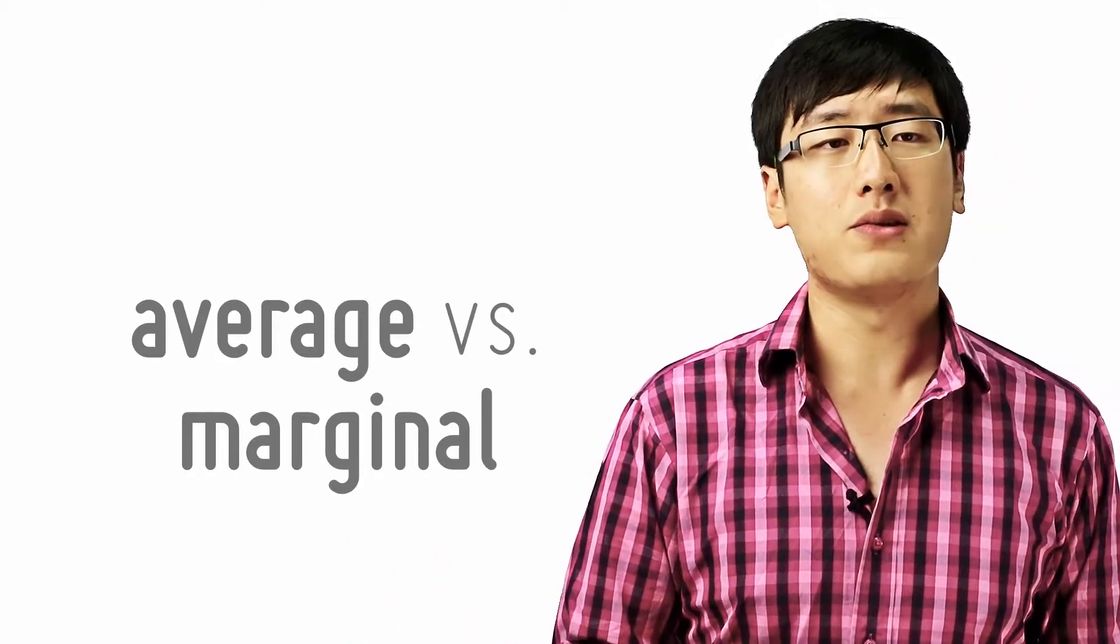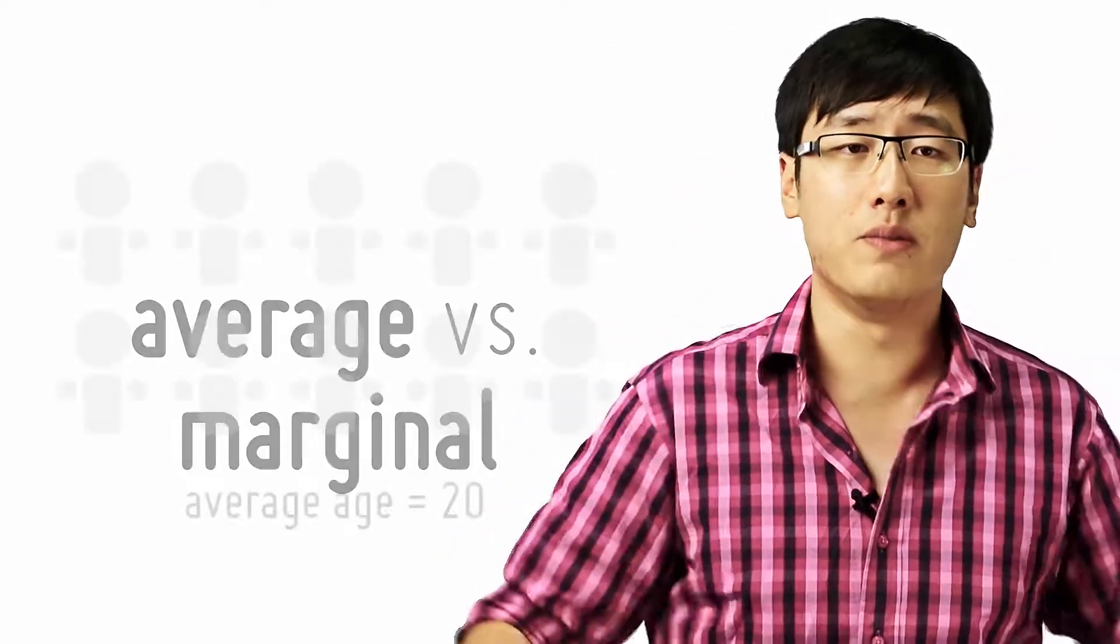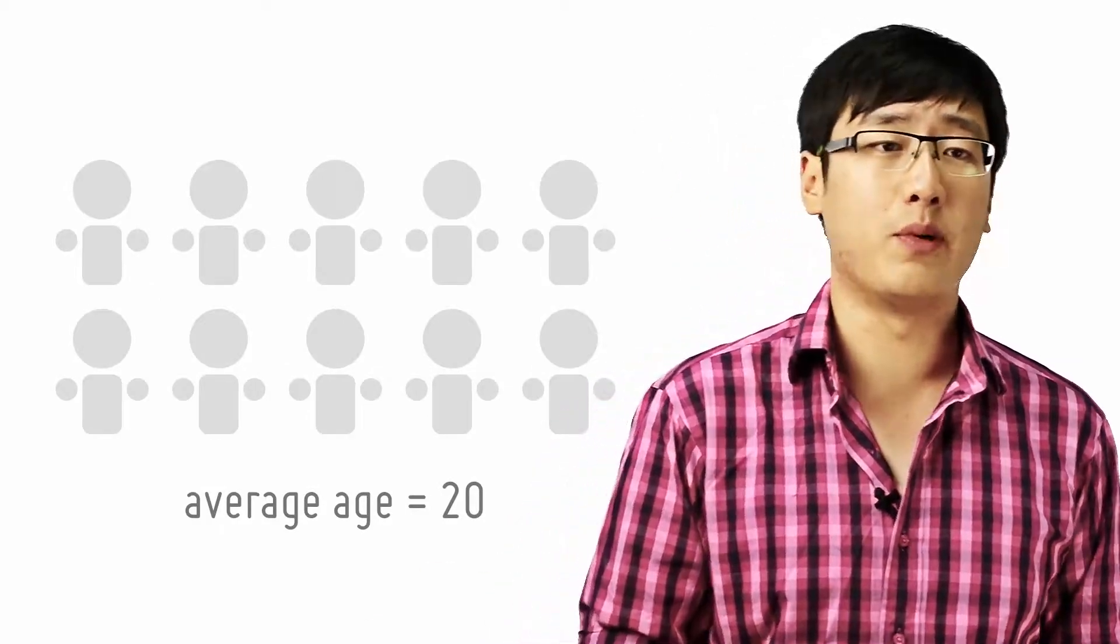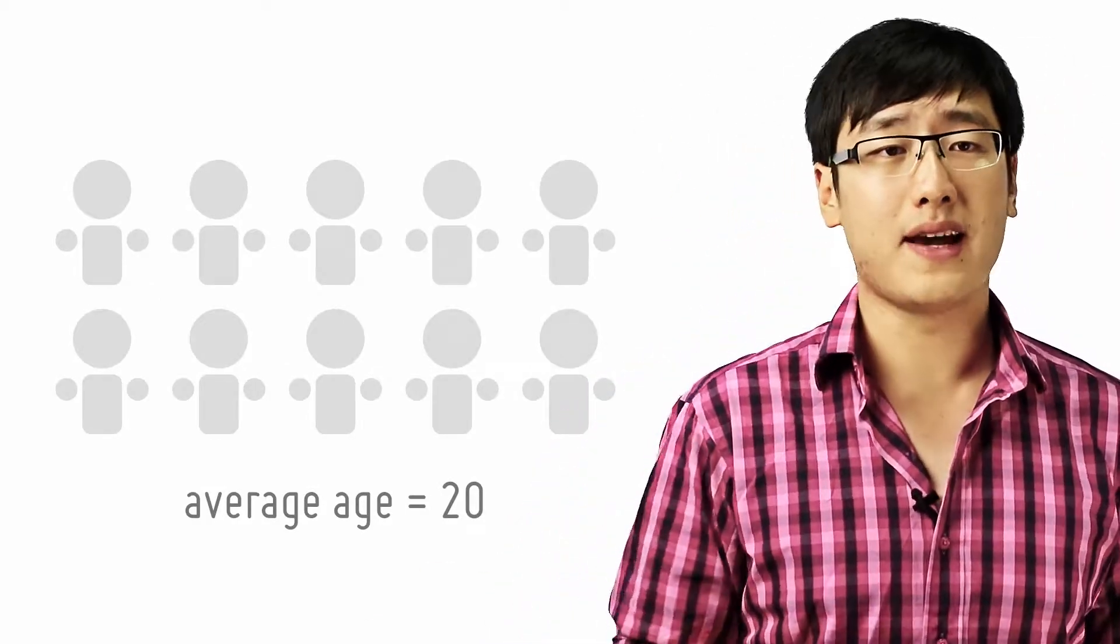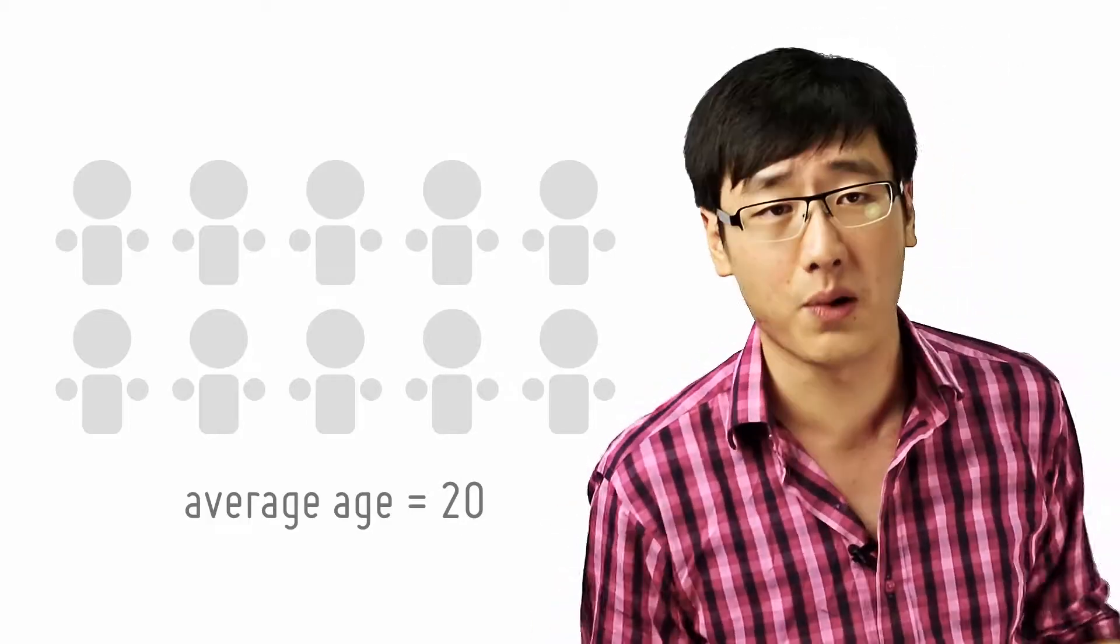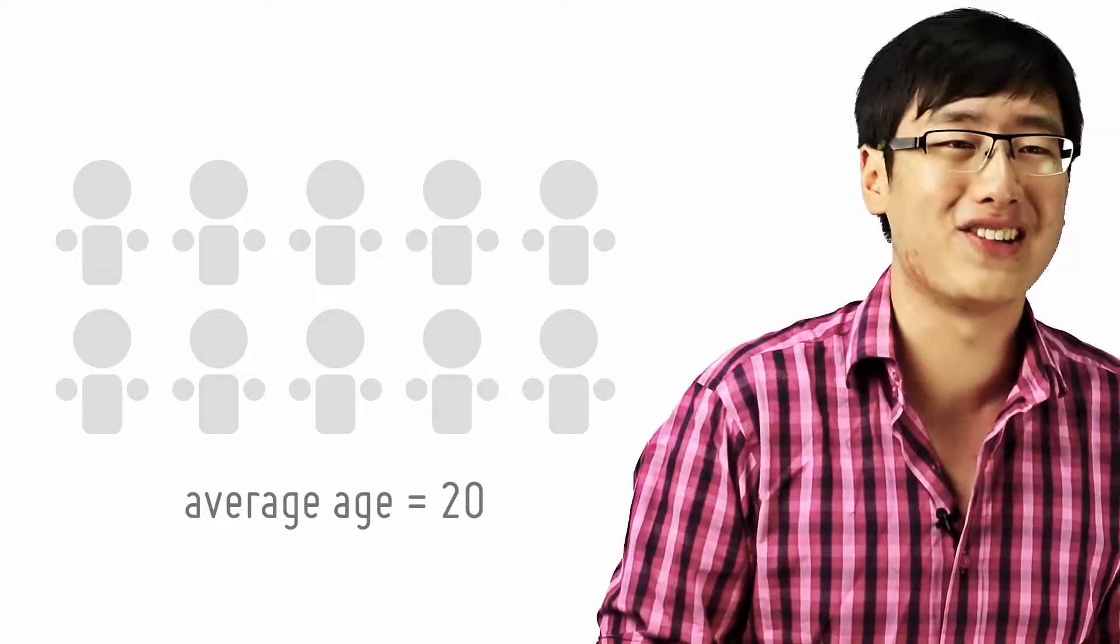Let's use an example. Imagine there's a room with 10 people in it, and the average age is 20. You know that if the average age is 20, it doesn't mean everyone is 20 years old. Some might be 30, some might be 40, and some might be 10, but the average is 20.